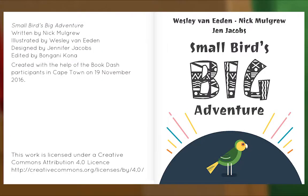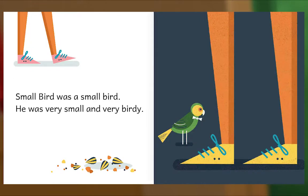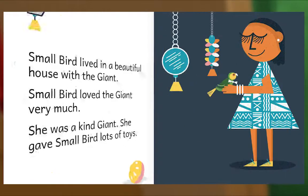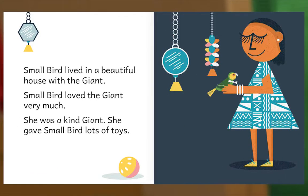Small Bird's Big Adventure! Written by Nick Mulgrew, illustrated by Wesley Van Eden, designed by Jennifer Jacobs. Small Bird was a small bird — he was very small and very birdy. Small Bird lived in a beautiful house with the giant. Small Bird loved the giant very much.